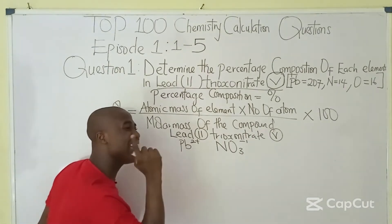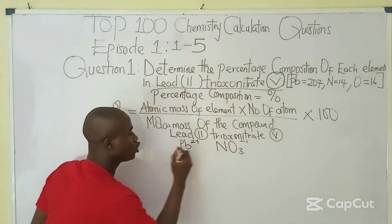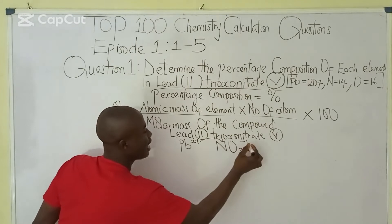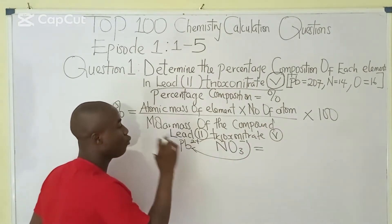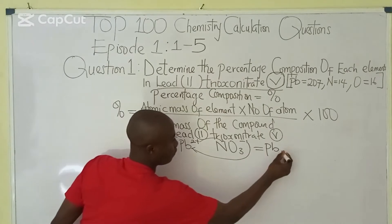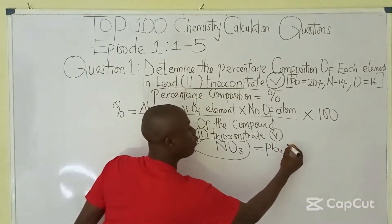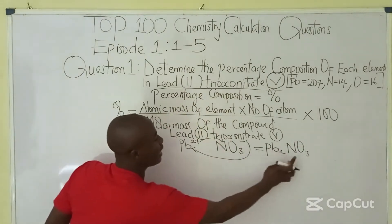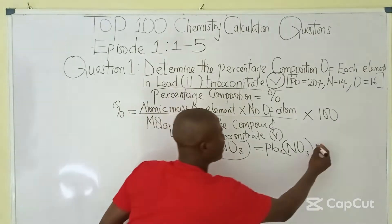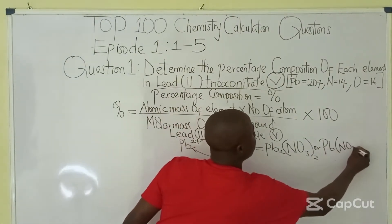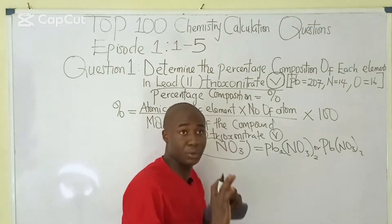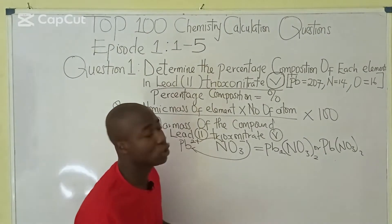What happens next is to simply exchange the charges of these particular symbols. So 2 will come here and 1 will come here without the sign. At the end, the chemical formula of lead(II) trioxonitrate(V) is Pb(NO₃)₂ — we write PbNO₃ in brackets with a subscript 2. That is the chemical formula.